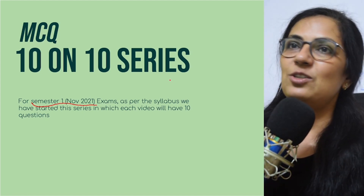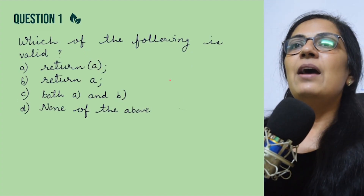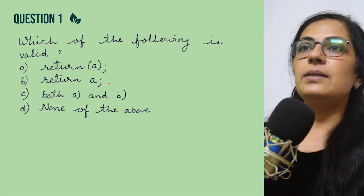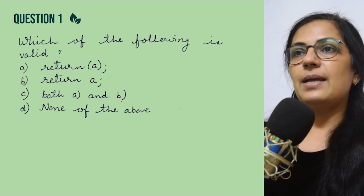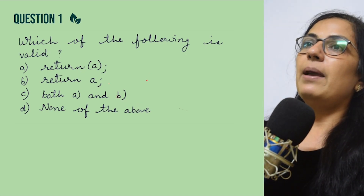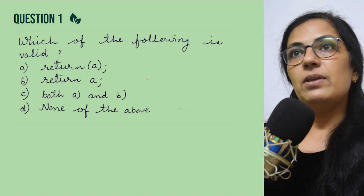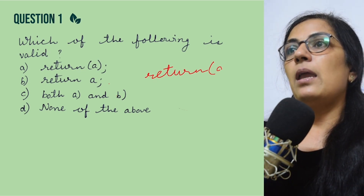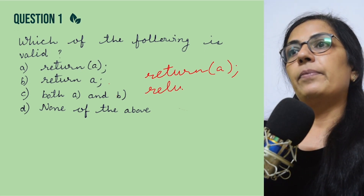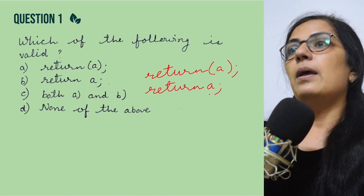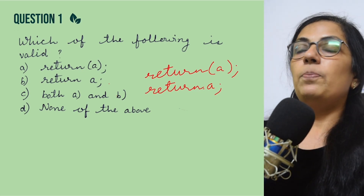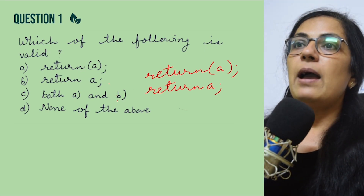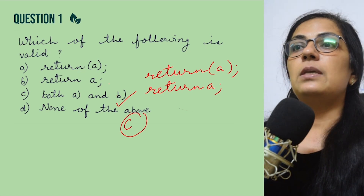Let us start today's MCQ series. The topic remains user defined methods. First question: which of the following is a valid return statement? Options: (a) return a semicolon, (b) return a, (c) both A and B are correct, (d) none of the above. Both 'return a' and returning only the variable name are correct, so the correct option is C.